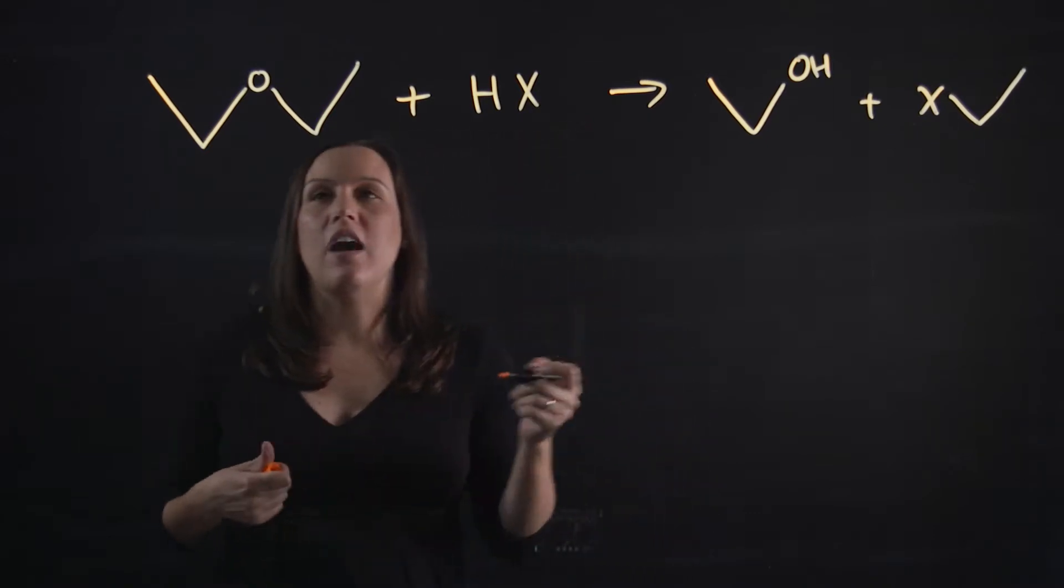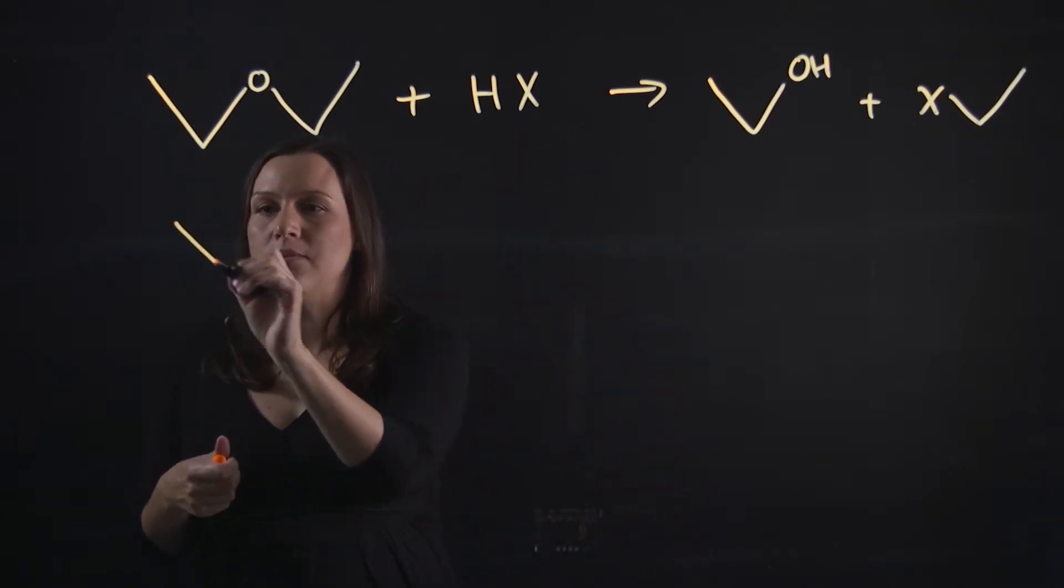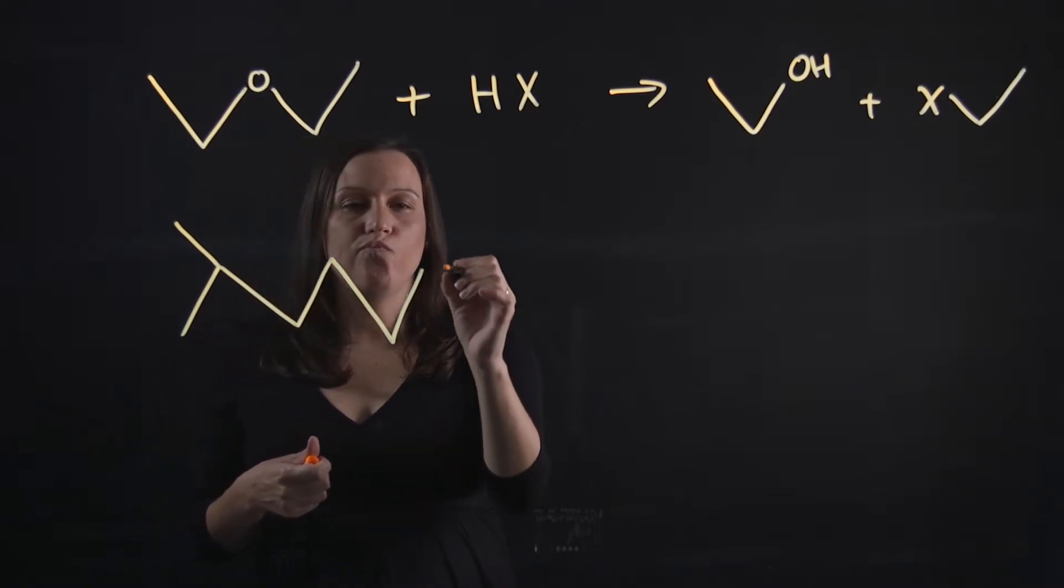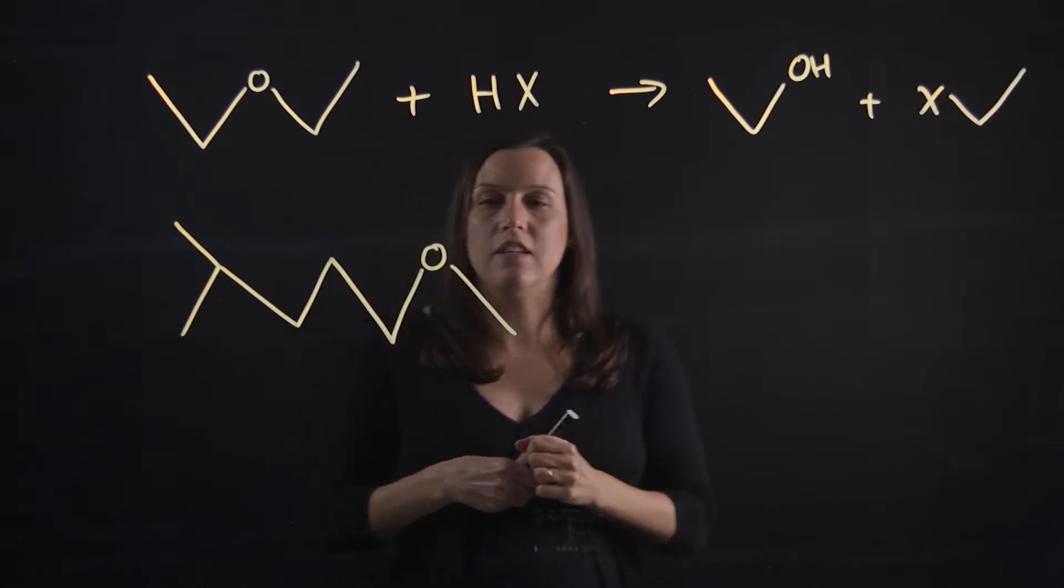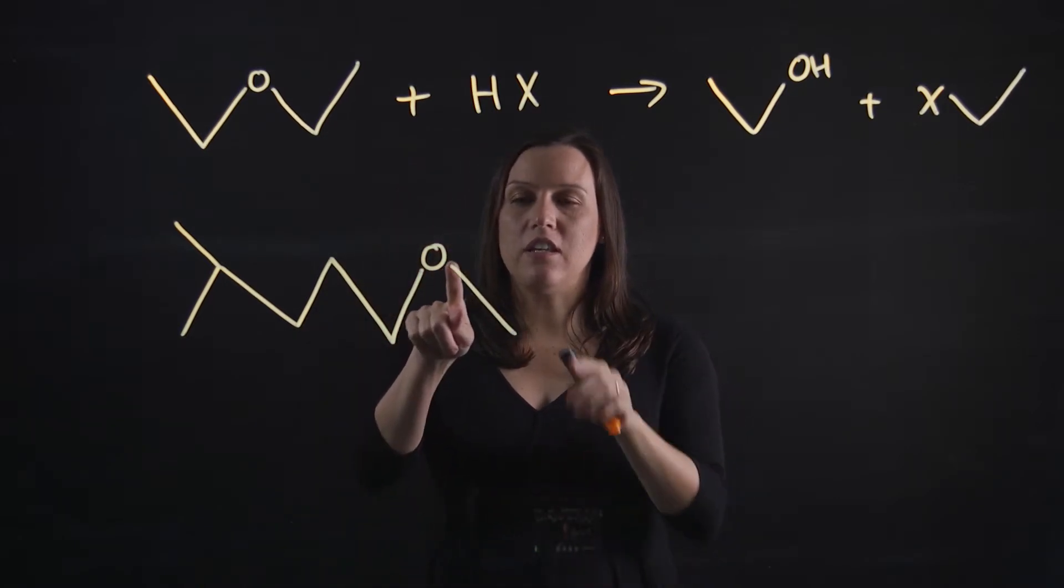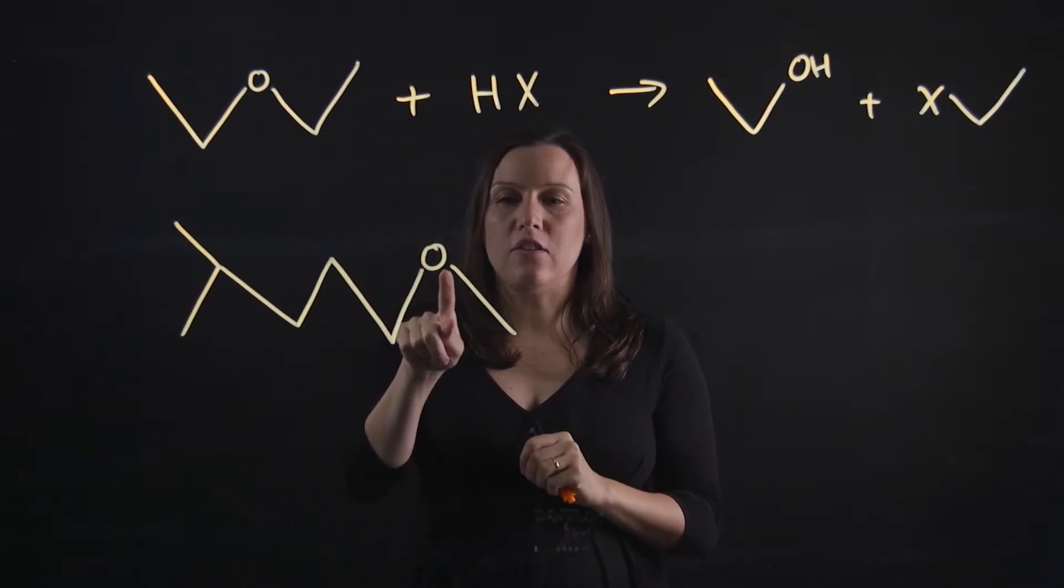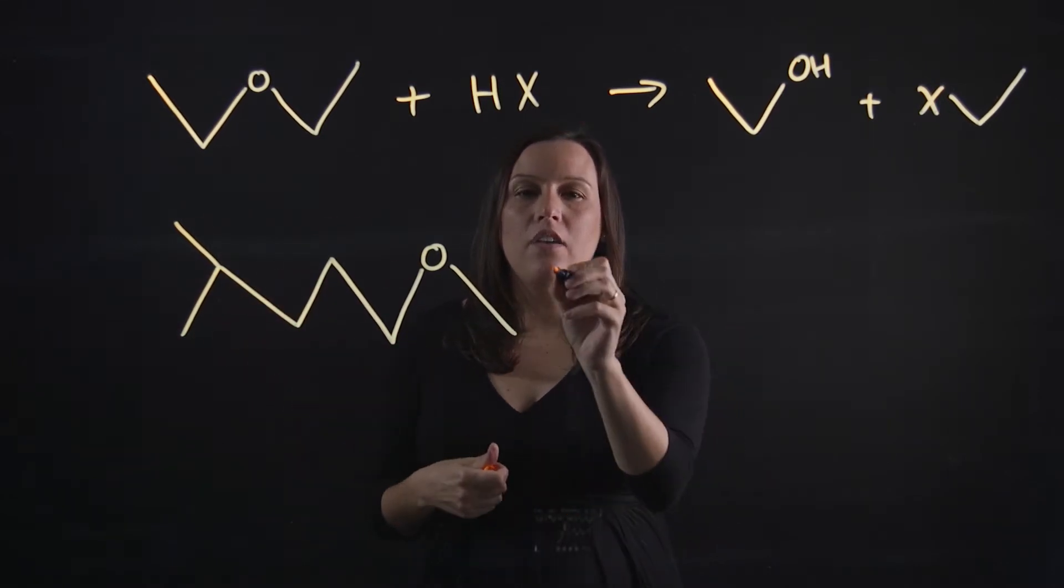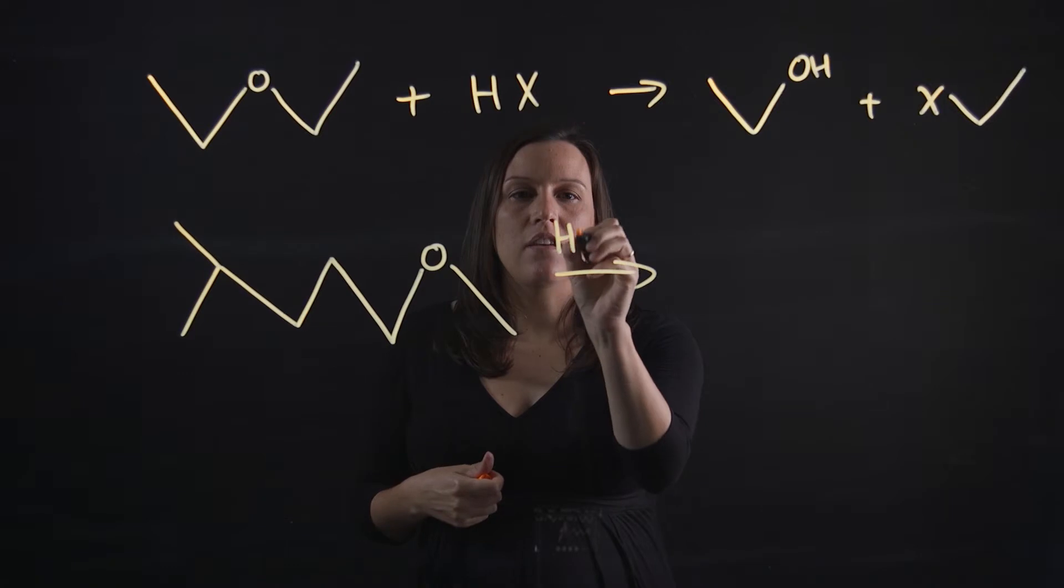Now if I have an unsymmetrical ether, let's pick something like that. You can see we've got the oxygen here, so one of the sides has just got a methyl and the other one's got a fairly large bulky group there. If I expose that to HX, I'll